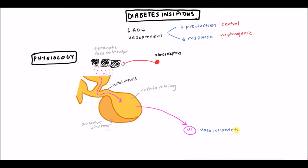Why would you want to vasoconstrict? If your osmolarity is high, one reason could be low volume — you're losing water for some reason — which can also lead to low blood pressure. So ADH stimulates vasoconstriction to help maintain blood pressure, because the body definitely wants to maintain that as much as it can.